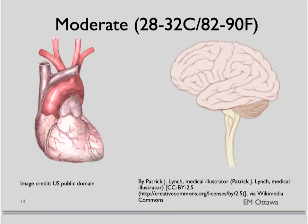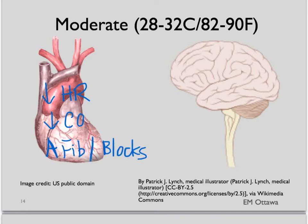As we get to moderate hypothermia, the core body temperature has dropped to between 28 to 32 degrees Celsius. The heart now starts to slow down and cardiac output decreases. Arrhythmias now start to occur, such as atrial fibrillation or heart blocks. In terms of the brain, the patient will have decreased level of consciousness and ataxia. Shivering now stops.